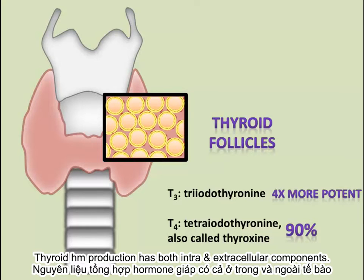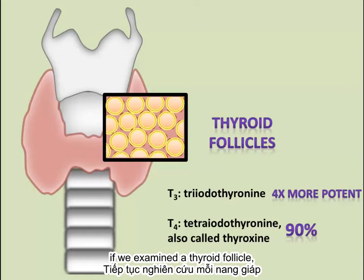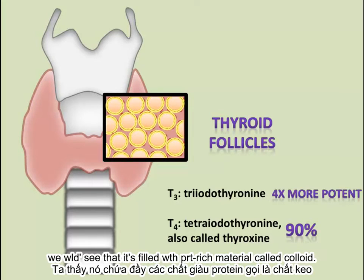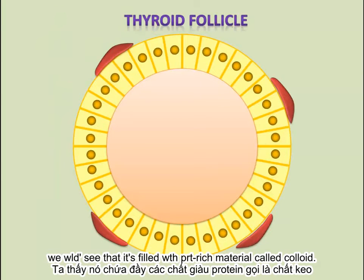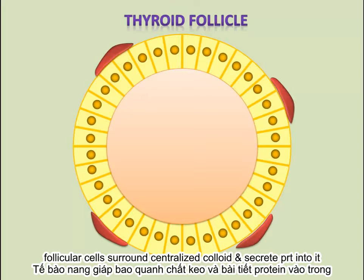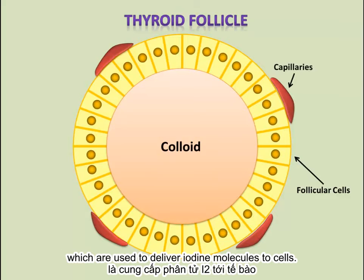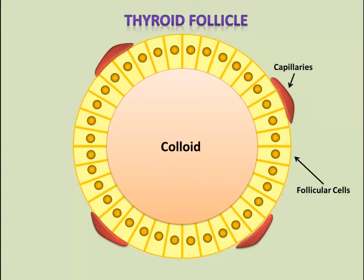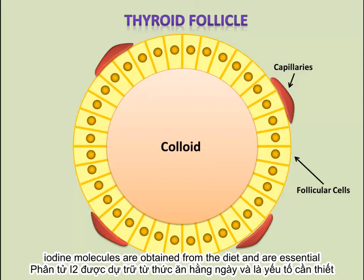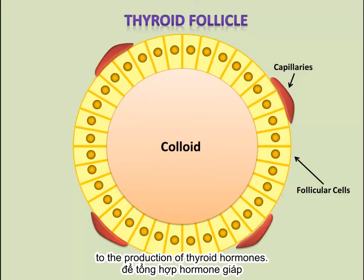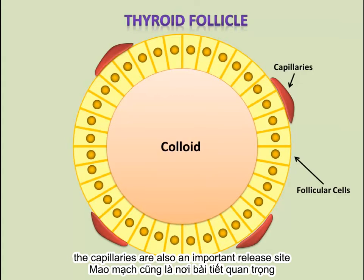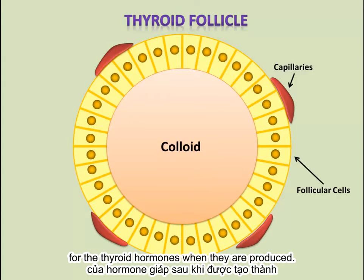Thyroid hormone production has both intracellular and extracellular components. If we examined a thyroid follicle, we would see that it is filled with a protein-rich material called colloid. Follicular cells surround the centralized colloid and secrete proteins into it. The follicular cells are closely associated with capillaries, which are used to deliver iodide molecules to the cells. Iodide molecules are obtained from the diet and are essential to the production of thyroid hormones. The capillaries are also an important release site for the thyroid hormones once they are produced.